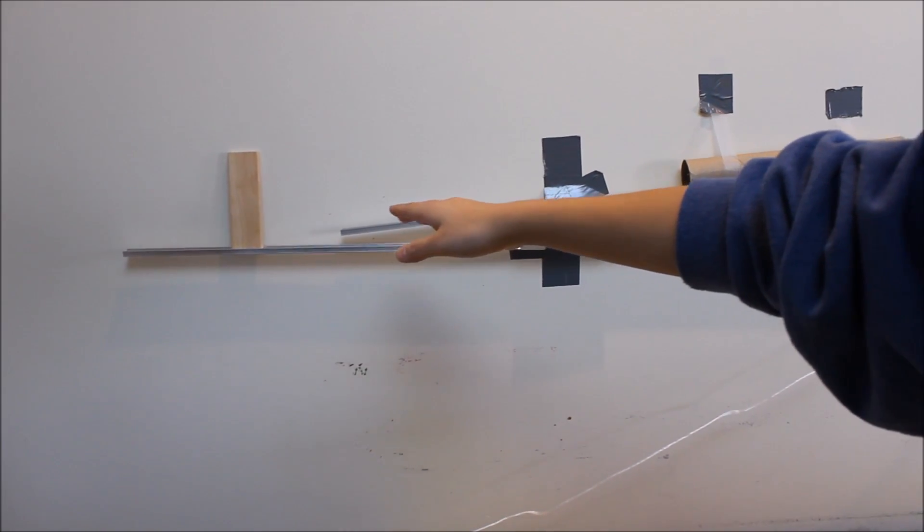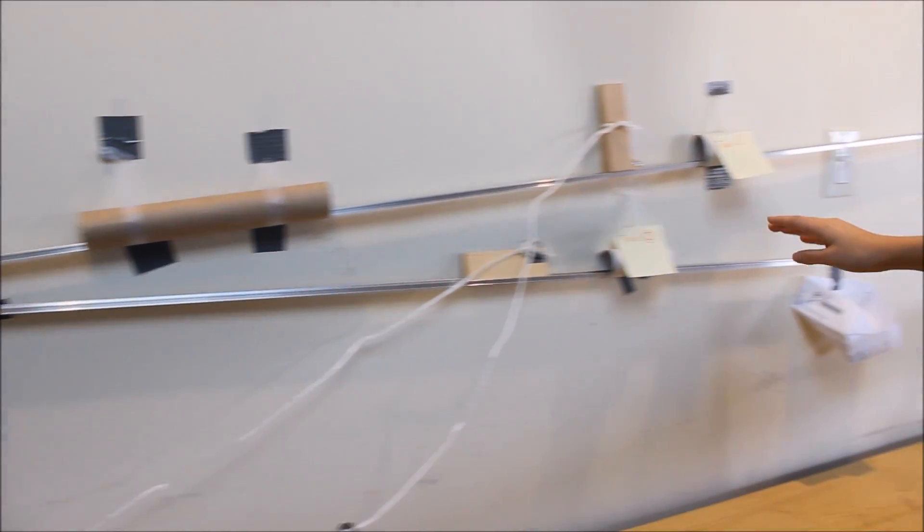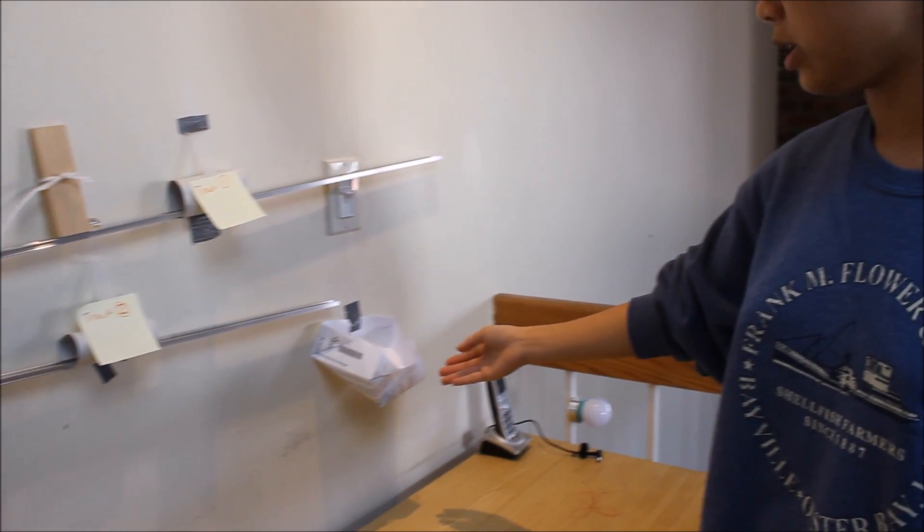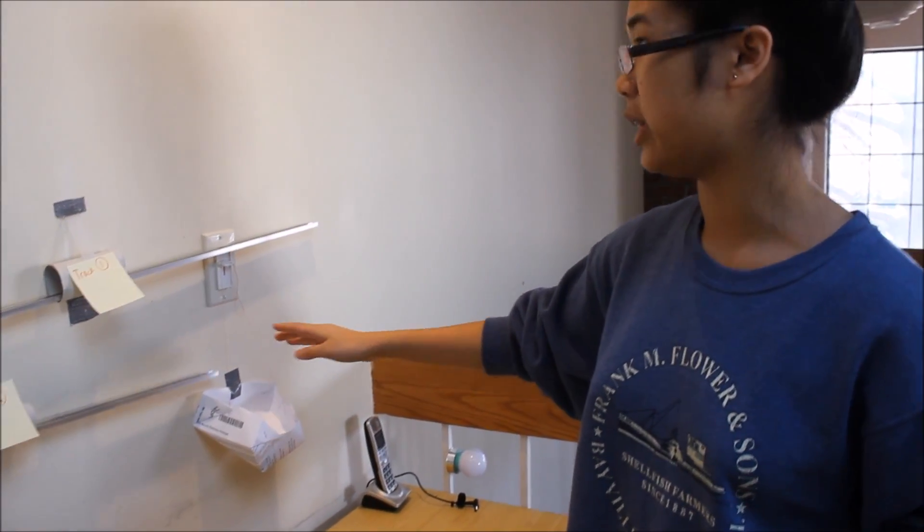And going onto track two, going down and falling finally into this paper box, which will then bring down the light switch.